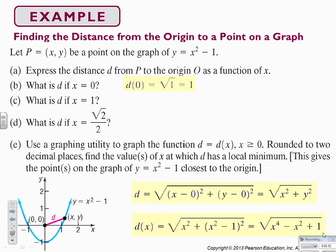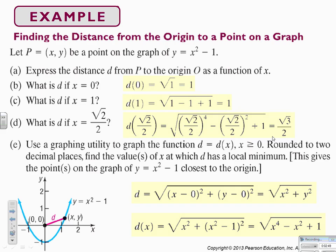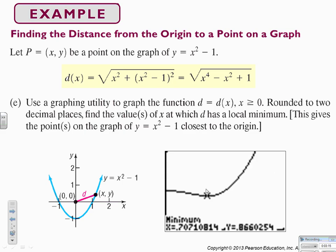When we plug in zero we get square root of 1, which is 1. When we plug in 1 we get 1 minus 1 plus 1, which is also 1. When we plug in root 2 over 2 we get root 3 over 2. So our function to find the distance is the square root of x to the fourth minus x squared plus 1. We use a graphing utility and the minimum operation under calc to find that the minimum is at x equals 0.707 and y equals 0.866.